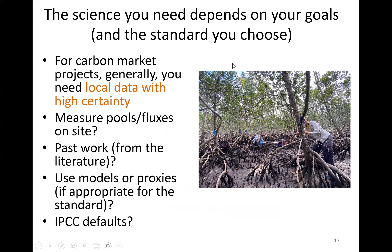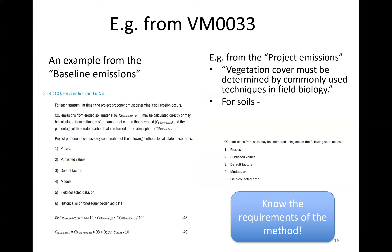To reiterate: the science you need depends on your goals and the standard you choose — whether VCS, Gold Standard, REDD+, or the Australian government method. In general, for carbon market projects you need local data with high certainty. You have to decide: do you need to measure pools and fluxes on site? Can you use data from past work or the literature? Can you use models or proxies? What's appropriate for the standard you've chosen? And can you use IPCC default tier one values? There are a lot of moving parts, and you really need to know the requirements of what you're getting into.